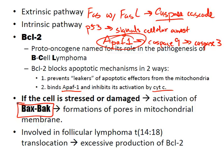This combination leads to cytochrome C being released into the cytoplasm and therefore apoptosis. BCL-2 is also involved in follicular lymphoma, with a translocation of 14-18, leading to excessive production of BCL-2.